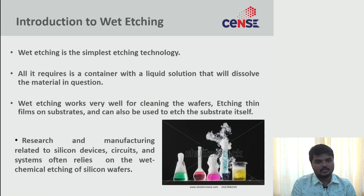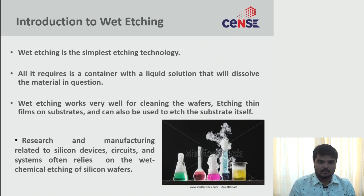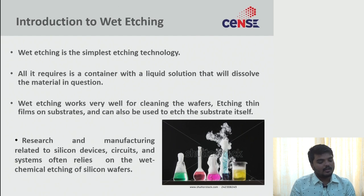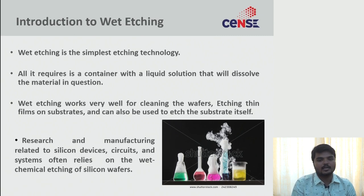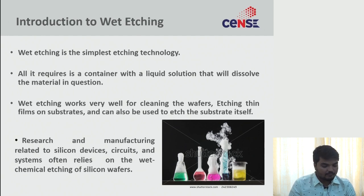Wet etching just requires a container — petri dishes or any container — where we mix chemicals in the correct ratios for cleaning or etching. All it requires is a container with a liquid solution that will dissolve the material in question. It may form a salt or byproduct, first as an intermediate and then dissolving as a byproduct. This is how wet etch works.